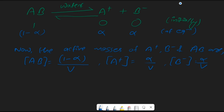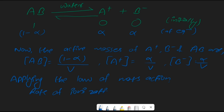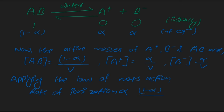Now we need to apply the law of mass action. Applying the law of mass action, the rate of ionization will be proportional to the active mass of this molecule, that is (1 − α)/V. Removing the proportionality sign and putting a constant K1, the rate of ionization equals K1 × (1 − α)/V. This is equation number 1.